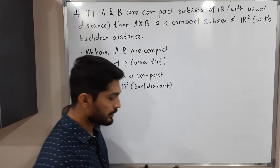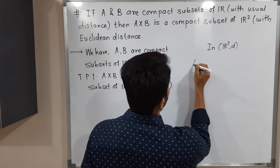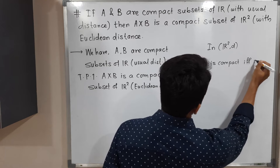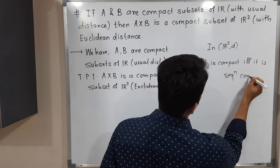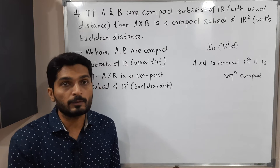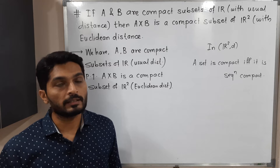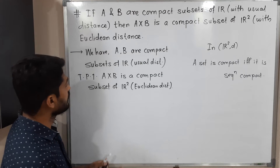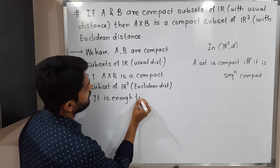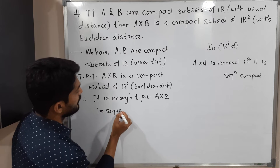We are going to use one result: in R2d, a set is compact if and only if it is sequentially compact. This means every compact set is sequentially compact and every sequentially compact set is compact. So to prove A×B is compact, it is enough to prove that A×B is sequentially compact.